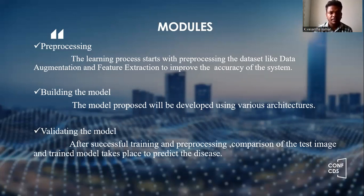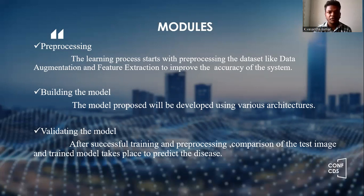Data augmentation involves enhancing the image by changing the image position, such as rotation, and applying color filters from gray to black, etc. Feature extraction is used to extract the important features of the image. These are the pre-processing stages.